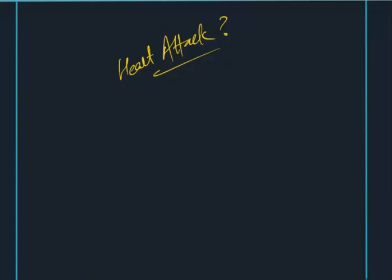Is cholesterol dumping in both veins and arteries? No, sir. Basically, there is the pulmonary artery. This situation is called atherosclerosis. What do you understand by cholesterol dumping? The deposition of cholesterol takes place in the blood vessels, which leads to a reduction in the diameter of the blood vessels and increases blood pressure.